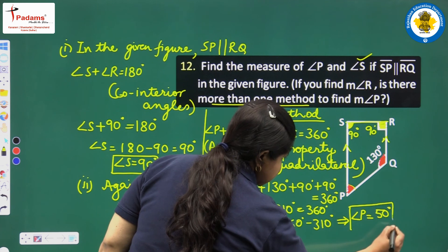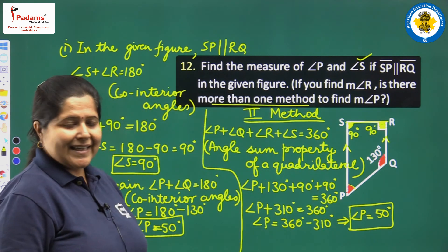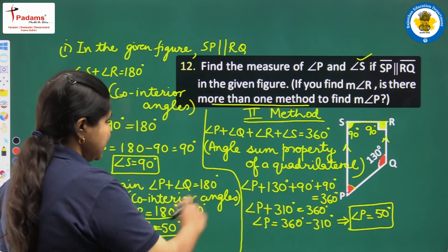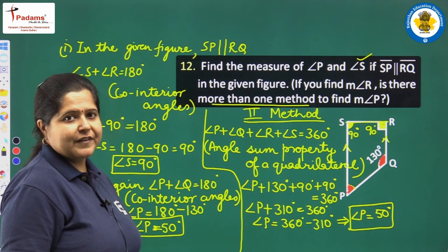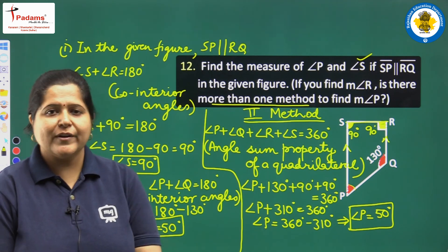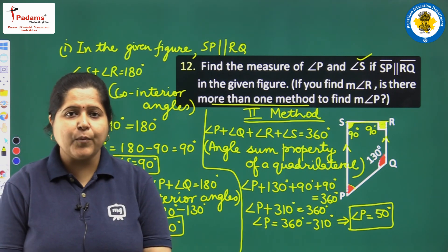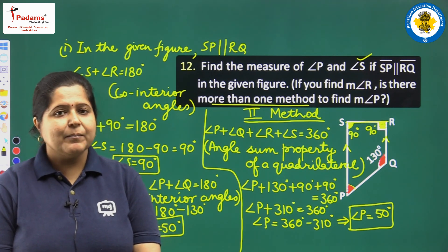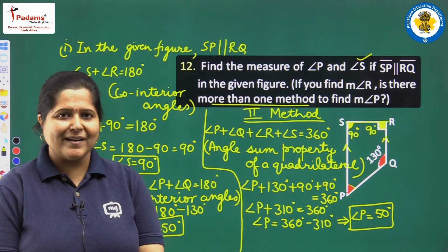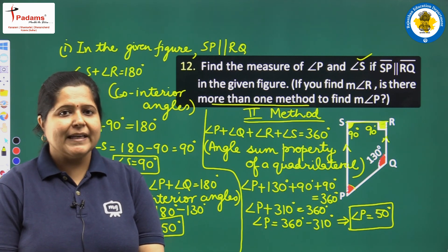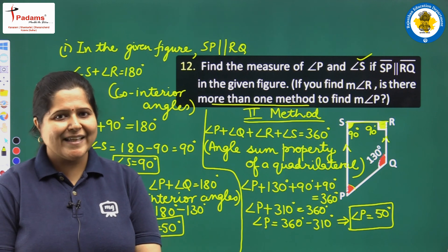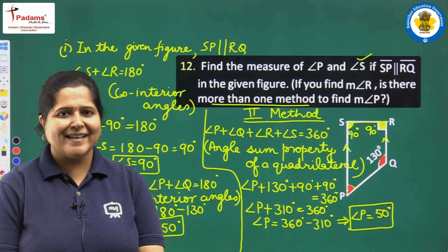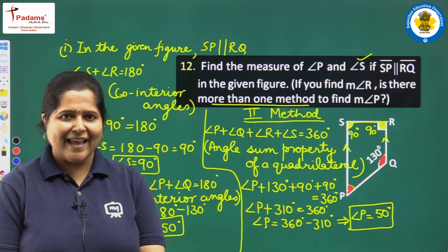We can find angle P by two different methods. This completes Exercise 3.3 based on the properties of a parallelogram. In our next class, we will be taking up some special parallelograms. Till then, practice this exercise. Thank you.